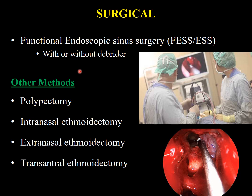Other methods include simple nasal polypectomy. If the polypi recur after this, intranasal ethmoidectomy is performed. If recurrence occurs again after intranasal ethmoidectomy, then extranasal ethmoidectomy or transethmoidal ethmoidectomy is done. Patient counseling before any surgical procedure is important — clearly explain that this disease has a tendency to recur, but with proper medication we can delay recurrence.